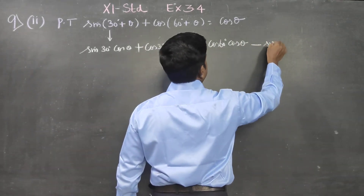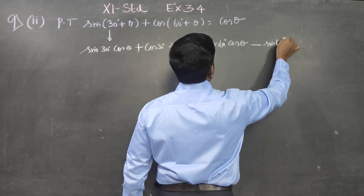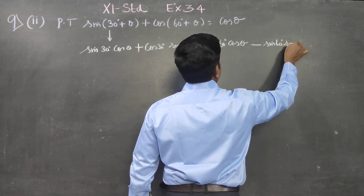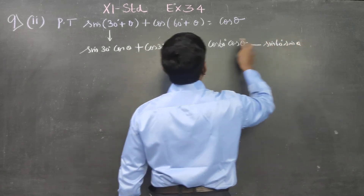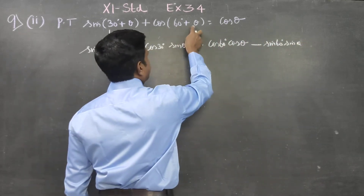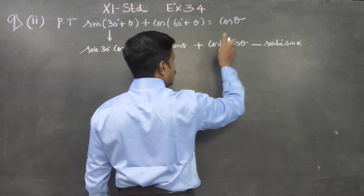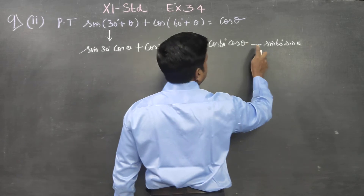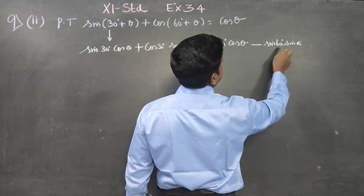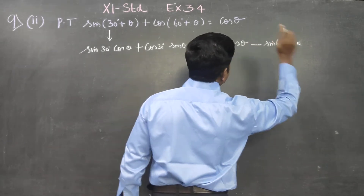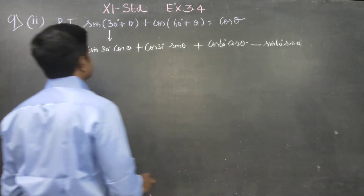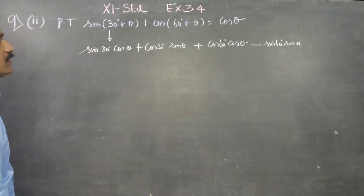sin 60, sin theta. The formula is cos(a+b) = cos a cos b minus sin a sin b.